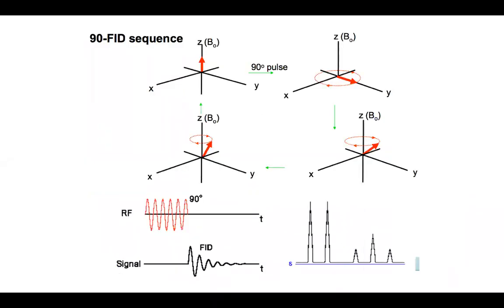In a typical 90-degree FID pulse sequence, magnetic dipoles align with the applied field, then a 90-degree RF pulse causes all dipoles to align perpendicular to the field. They begin to precess, and over time relax back to alignment with the field. Depending on how they are shielded or deshielded, we get different signals in the FID. This is then Fourier transformed from the time domain to the frequency domain to give our spectrum.